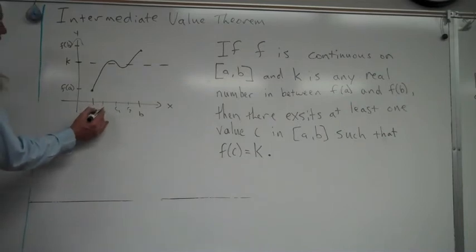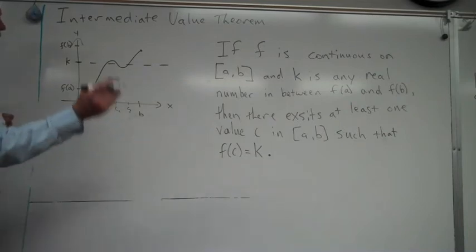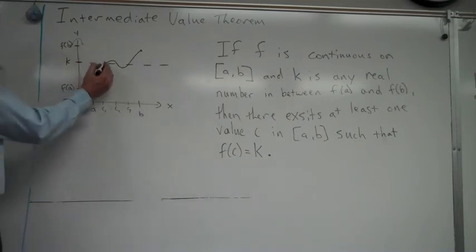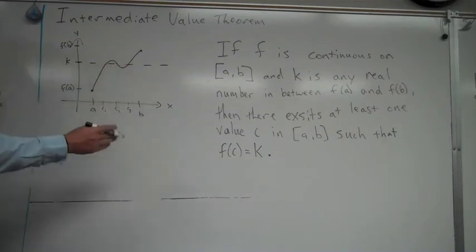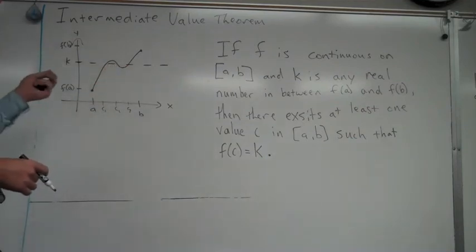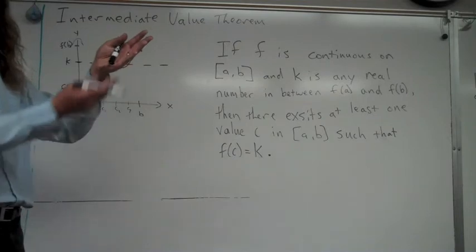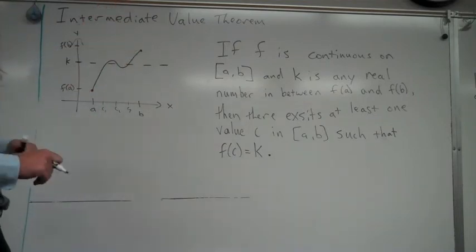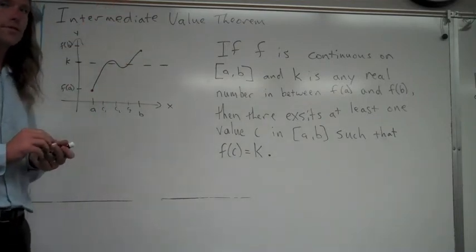So what it means is at all of these values c, if you plug those into the function, the y value of those would be equal to k. So again, it's a fancy way of saying that if you start below something, you finish above it, you've got to cross through all the numbers in between. And that only works with continuous functions.